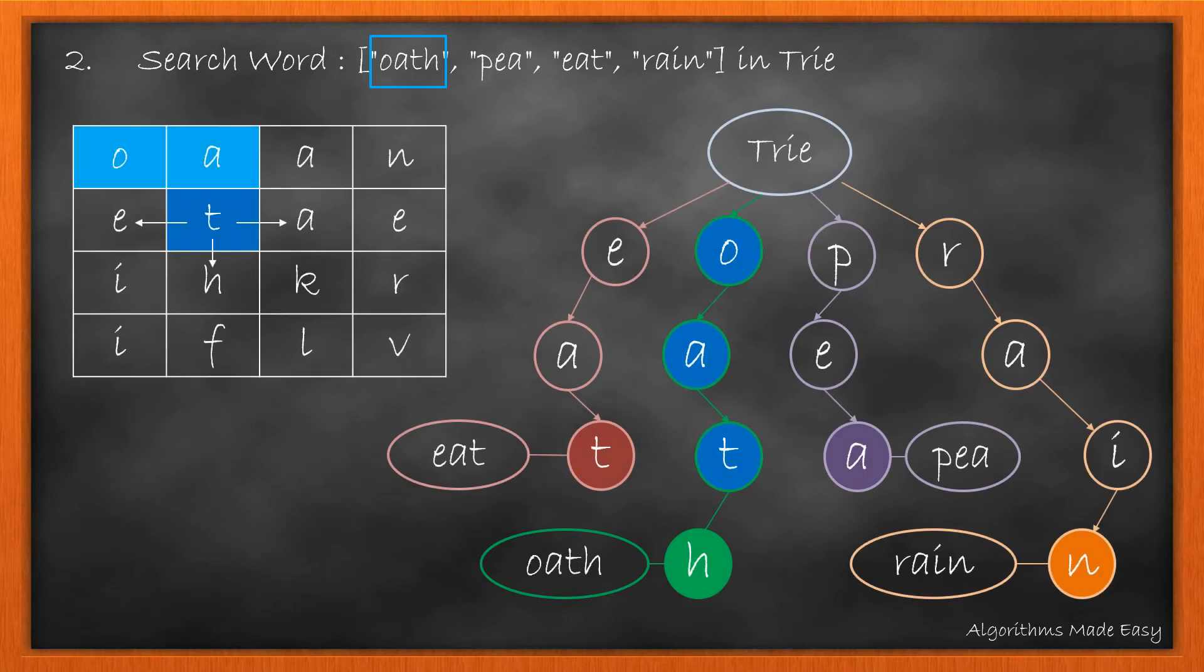Moving forward, we see T is present in the Trie and was adjacent to A. So we move here and search its adjacent values and find H. As H is the end of the word, we will add the word to the result list and keep searching if any more words with prefix OATH are in the Trie.